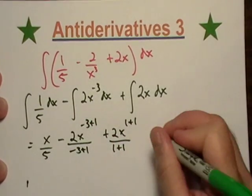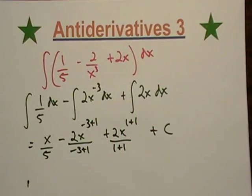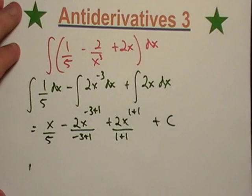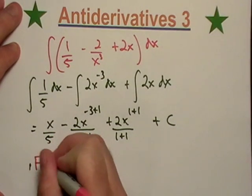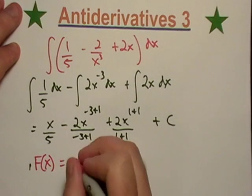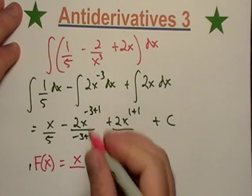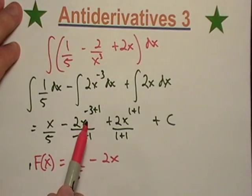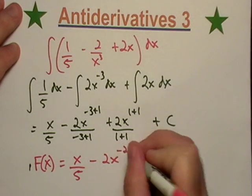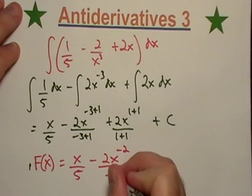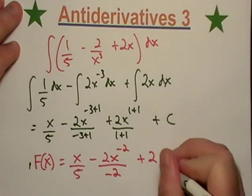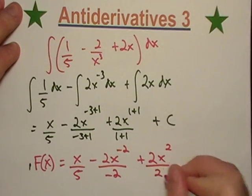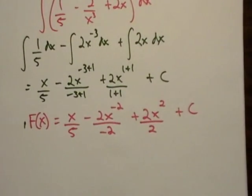And that gives me plus c, of course. Now I'm going to go ahead and put my F of x in here, big F of x, because I'm going to simplify everything. And that's going to be negative 2, negative 3 plus 1 is a negative 2. So that just gives me another negative 2, plus 2x squared over 2, plus c.